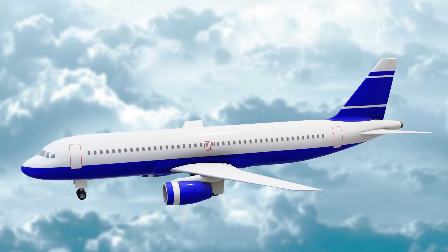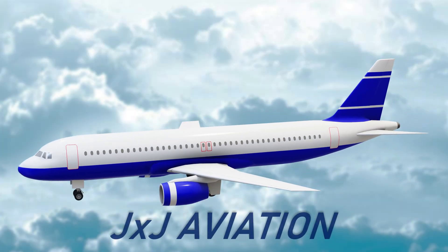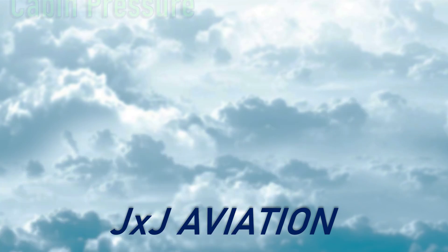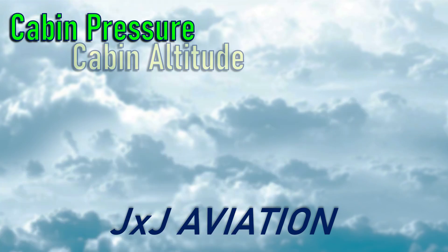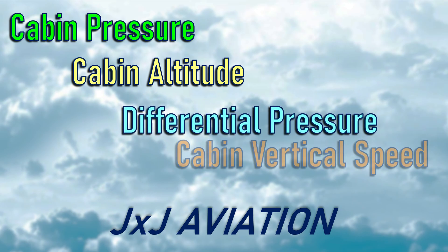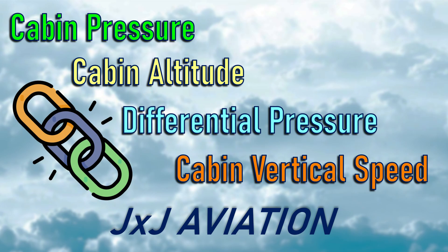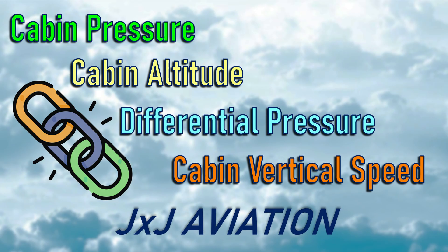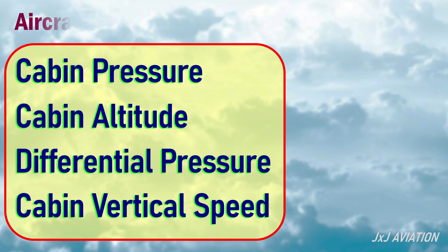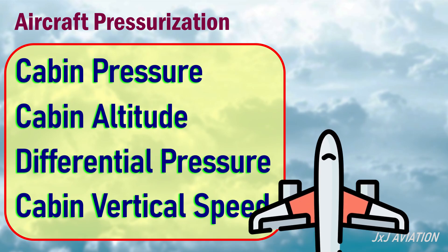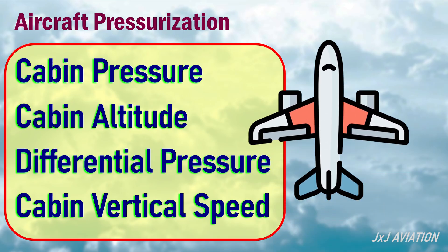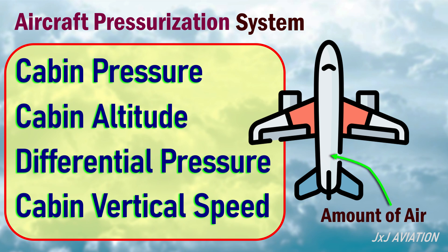Hello, welcome to GXJ Aviation. In this video, we will be looking at cabin pressure, cabin altitude, differential pressure, cabin vertical speed, and the relationship between them. These terms are connected to the pressurization of an aircraft, which is controlled by an aircraft's pressurization system. This system controls the amount of air available inside the aircraft, which is directly related to the air pressure in the aircraft.